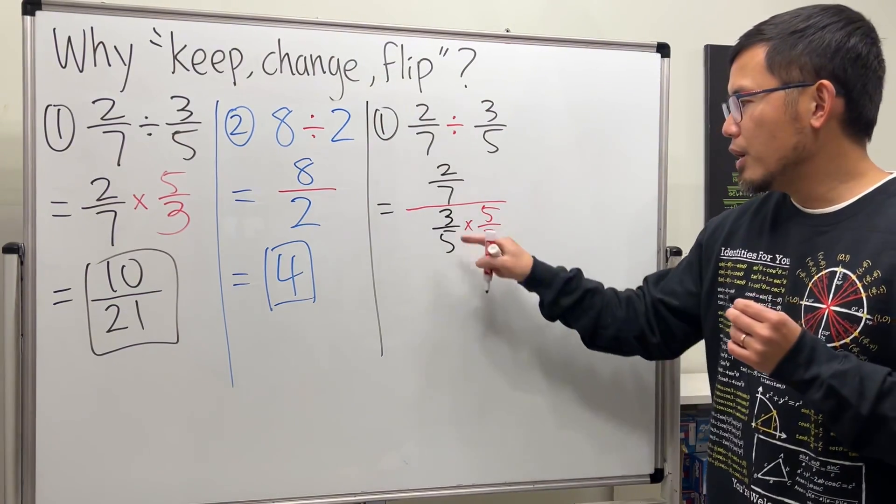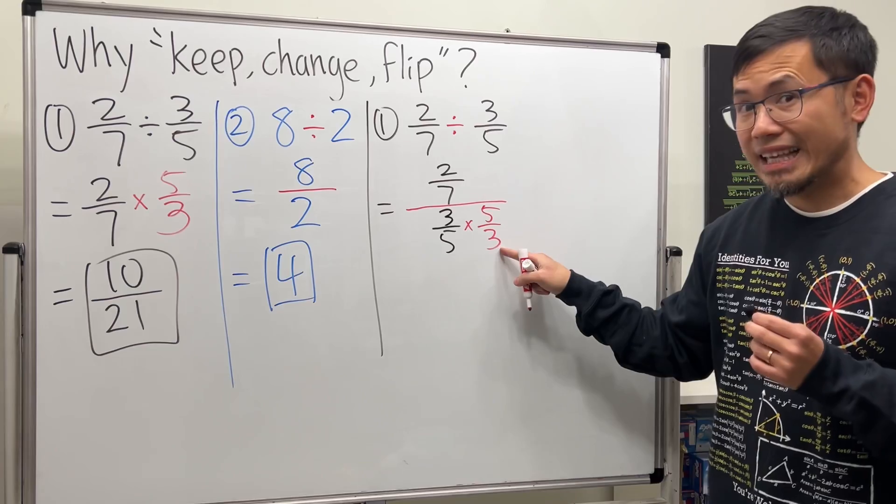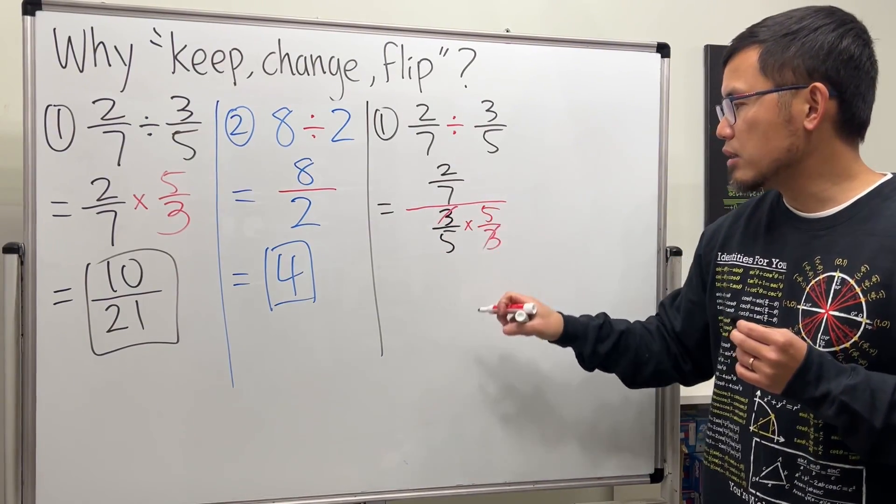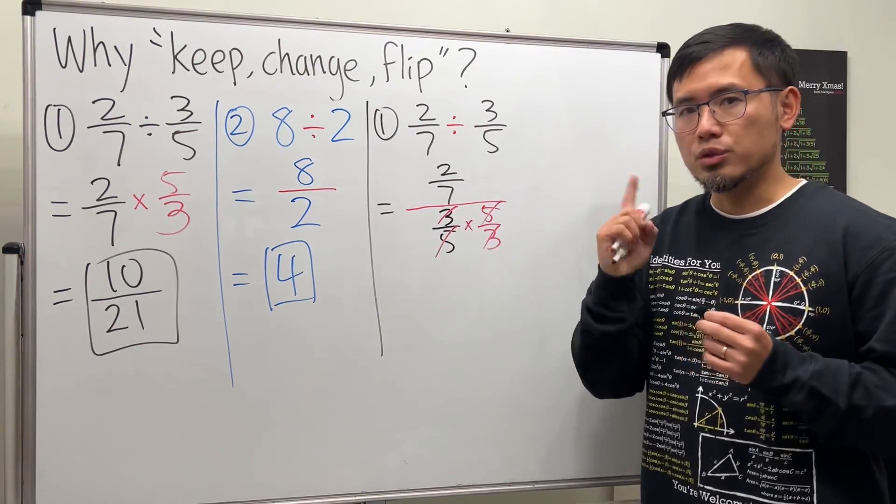How does this work? Well, when we multiply, of course, we can cross cancel. 3 and 3 cancel. 5 and 5 cancel. And the bottom is just 1.